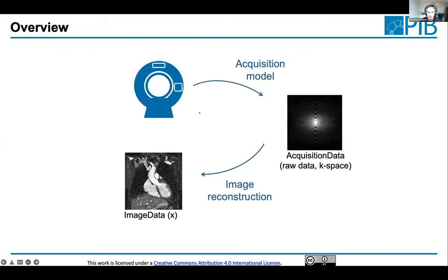We have a scanner and an acquisition model that describes whatever happens inside the MRI scanner. We get acquisition data, also called k-space data, which is basically a spatial Fourier space representation of our object. Then we do image reconstruction to get our image data.